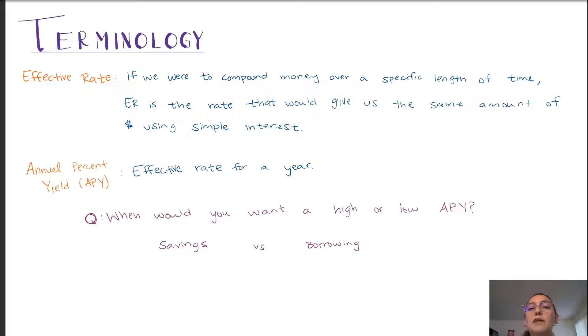So what is effective rate? Let's think about it this way. Suppose we compound money for a specific length of time. The effective rate is the rate that when we would apply this on the same amount of money using simple interest, it would earn us the exact same amount that we earned using compound interest.